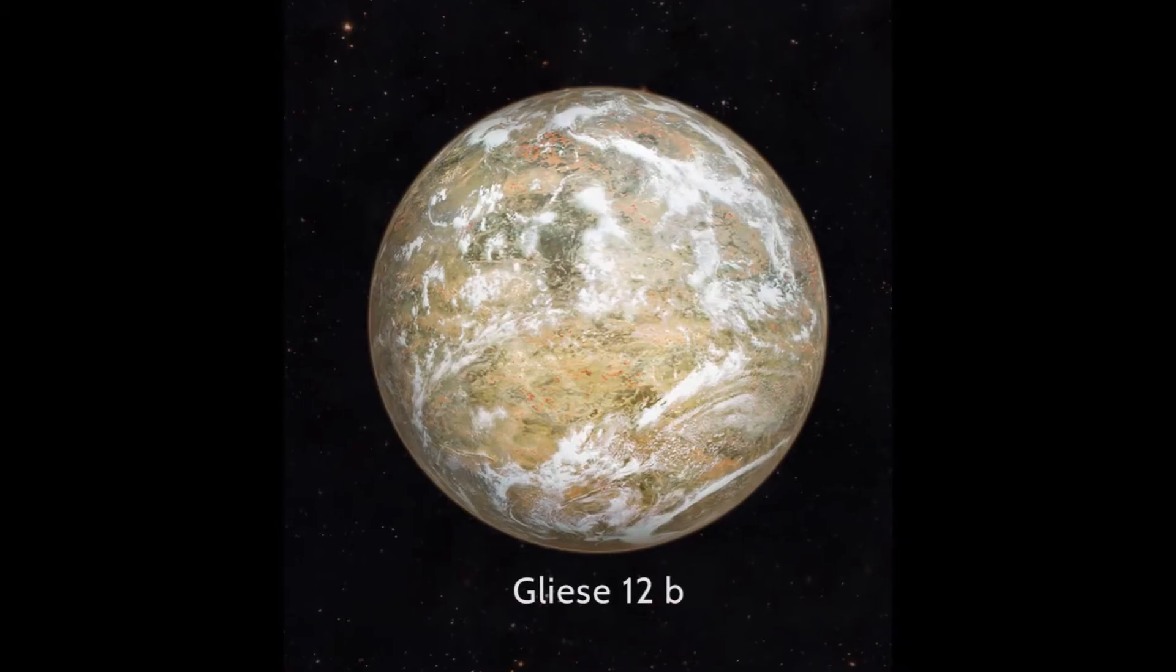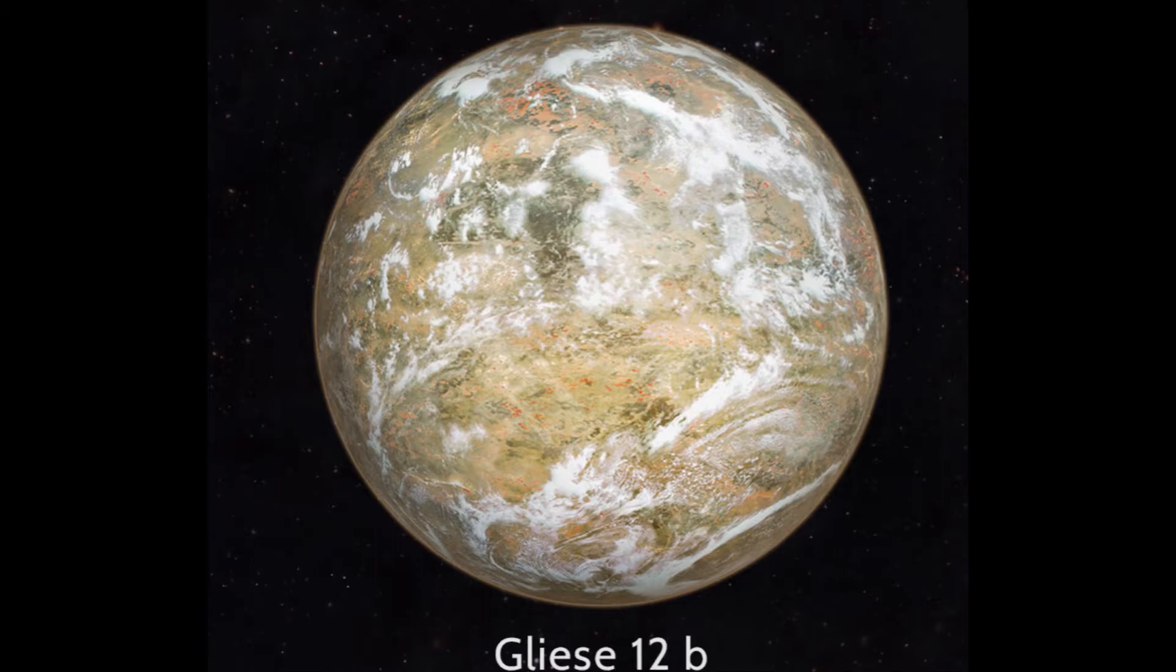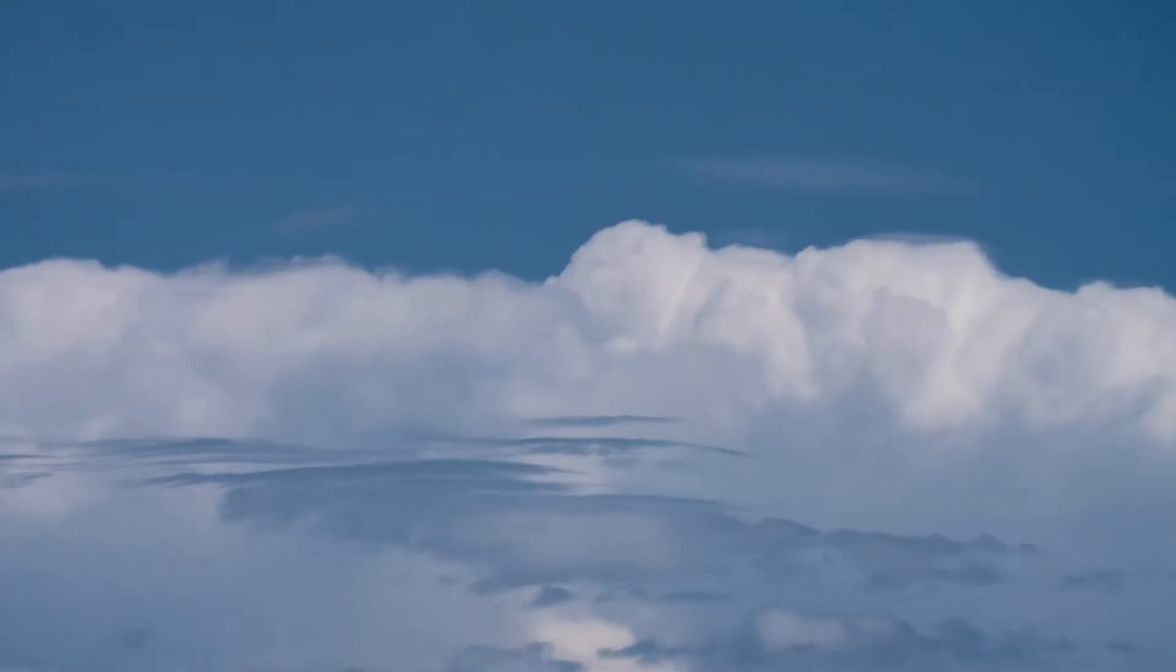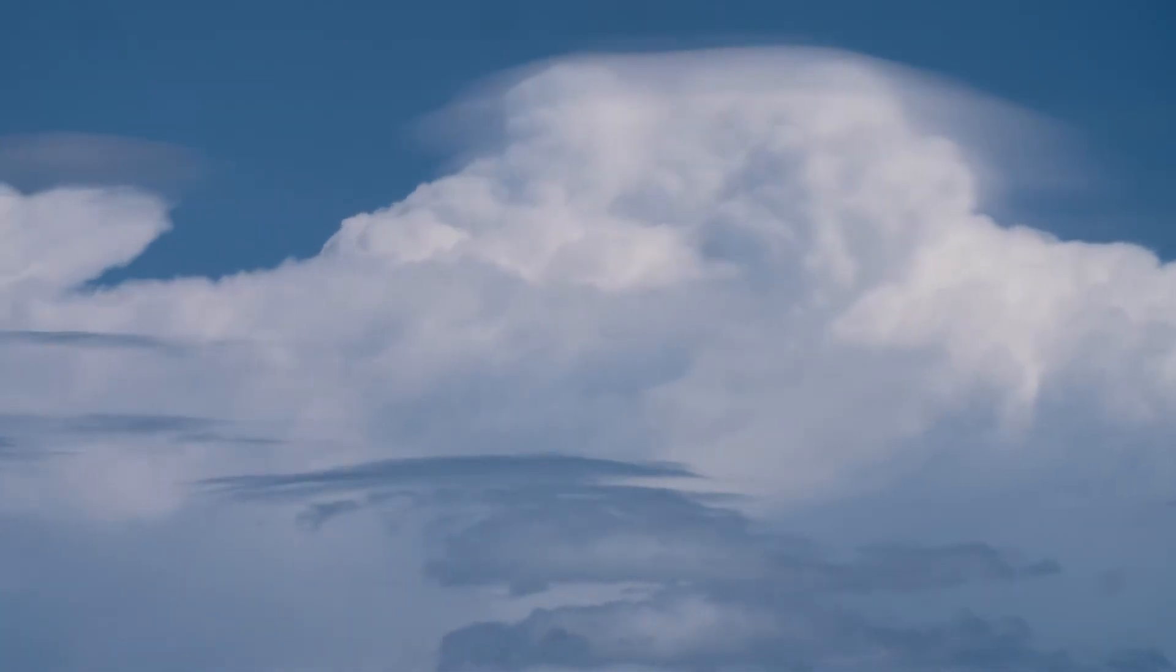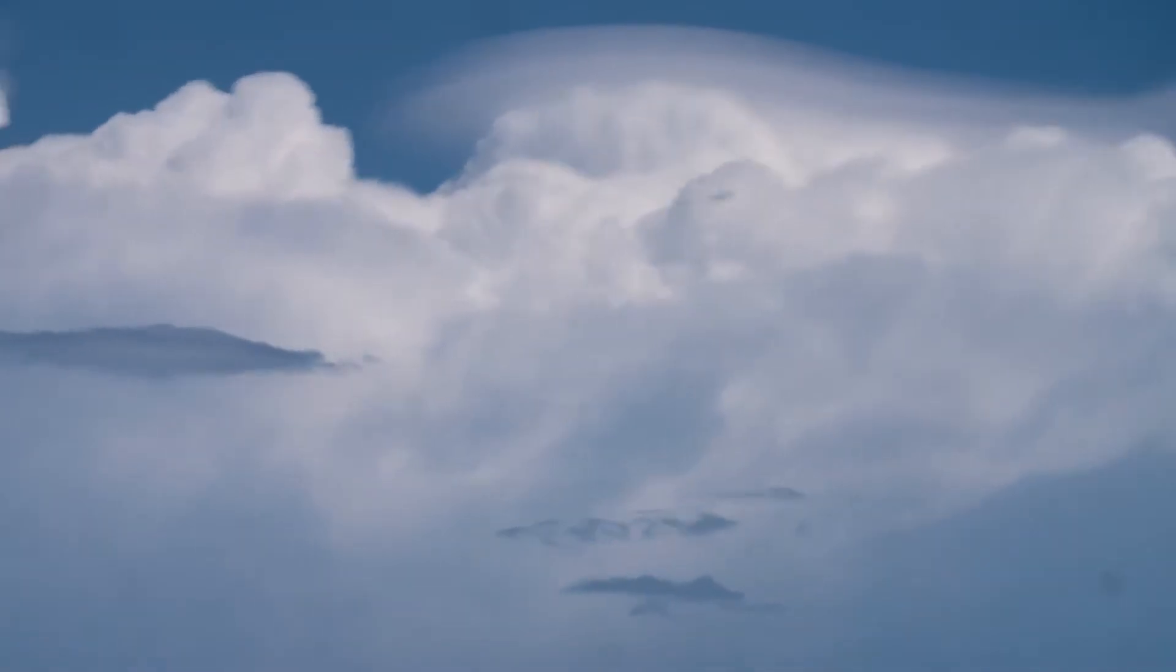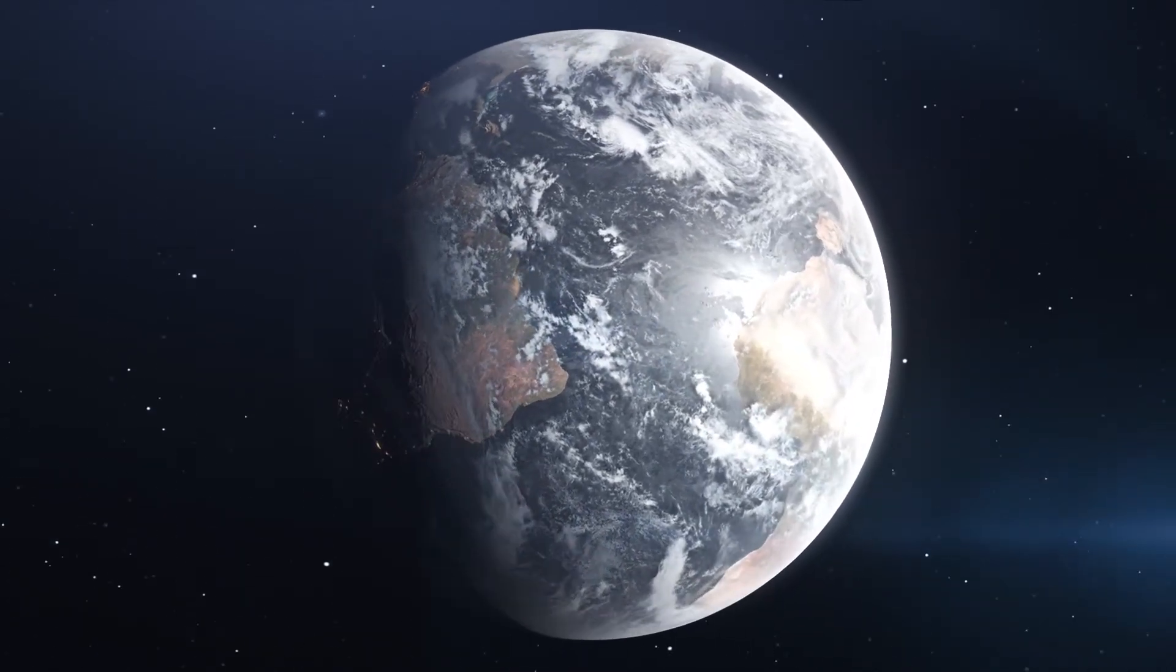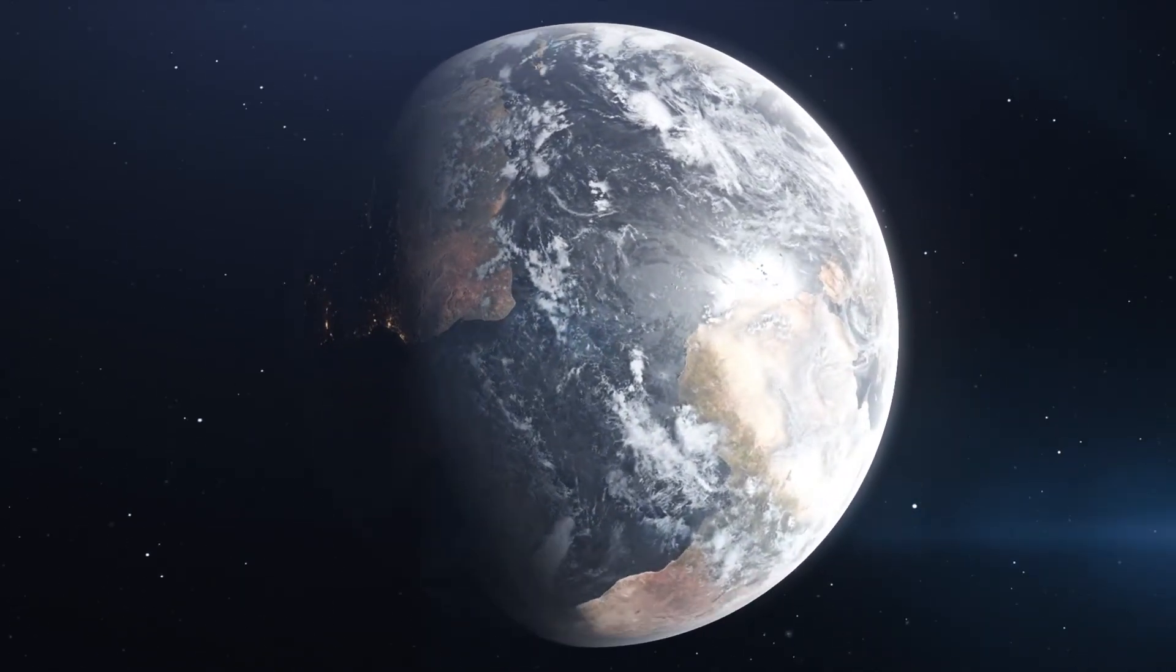The question now is, does Gliese 12b have an atmosphere? An atmosphere is essential, not only for keeping temperatures stable, but also as a shield from harmful radiation. Scientists believe that if the planet had a thick enough atmosphere, it could have a climate like Earth's tropics.